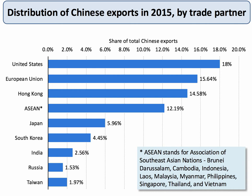Here are China's main export trade partners. In 2015, the biggest trade partner was the United States, followed closely by the European Union and then Hong Kong. ASEAN — the Association of Southeast Asian Nations, which includes Malaysia, Thailand, and Vietnam — accounts for 12% of total Chinese trade. Japan accounts for less than 6% and South Korea less than 5%. Russia and India barely figure in terms of the biggest Chinese export markets.